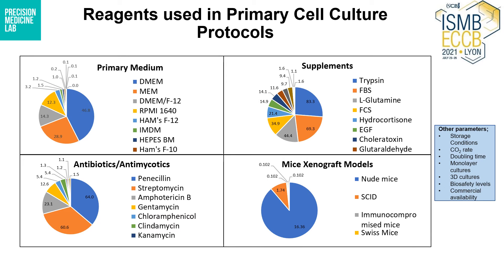Similarly, data was collected for the reagents used in primary cell culture protocols such as primary medium, supplements, antibiotic and antimicrobial solutions, mice xenograft models, and other parameters such as storage conditions, carbon dioxide rate, doubling time, monolayer cultures, 3D cultures, biosafety levels, and the commercial availability of the cell line.